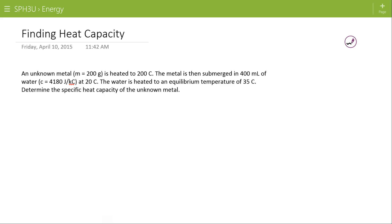So we have our metal, we have our water. Our metal has a mass of 200 grams, but we'll convert that to kilograms because I'm working in physics here. So 200 grams is 0.2 kilograms. It has an initial temperature of 200 degrees C.